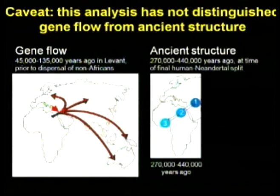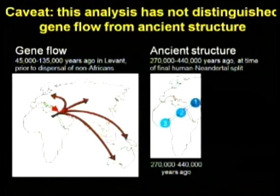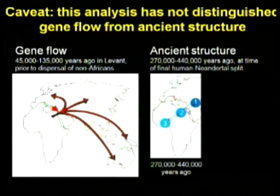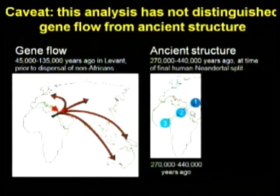But the other explanation is ancient structure. So if you imagine that, say, 350,000 years ago, the human population was substructured into three groups — one in the Near East, one in Northeast Africa, and one in more southern Africa — exchanged genes, but quite differentiated, like human populations today.